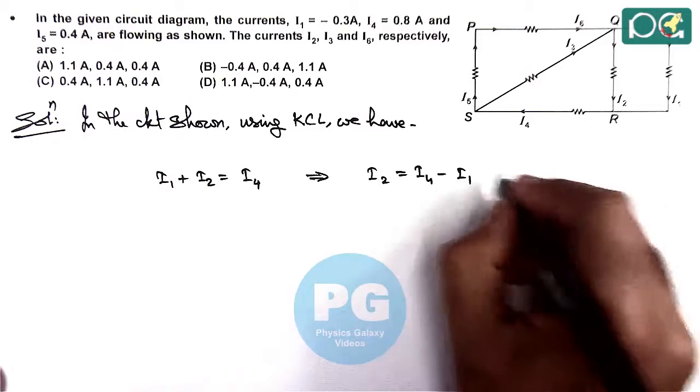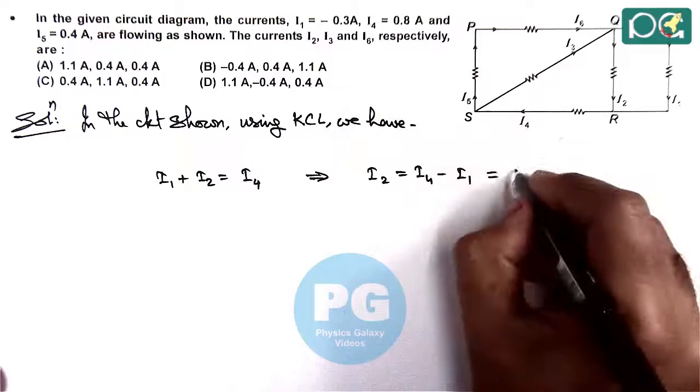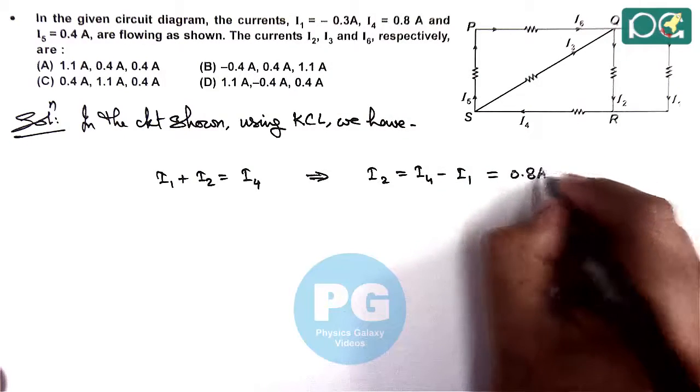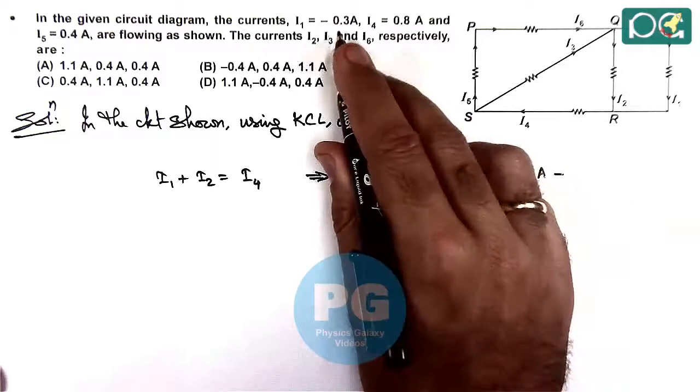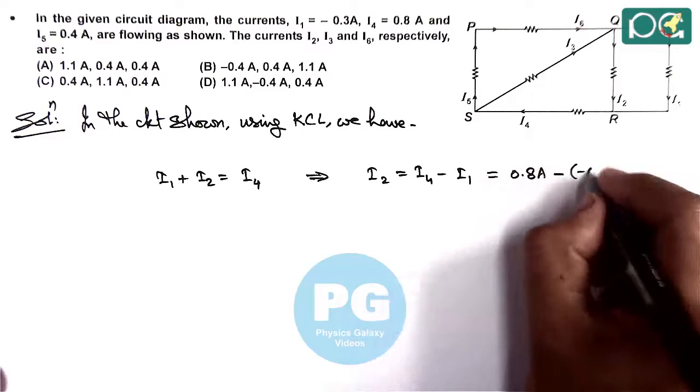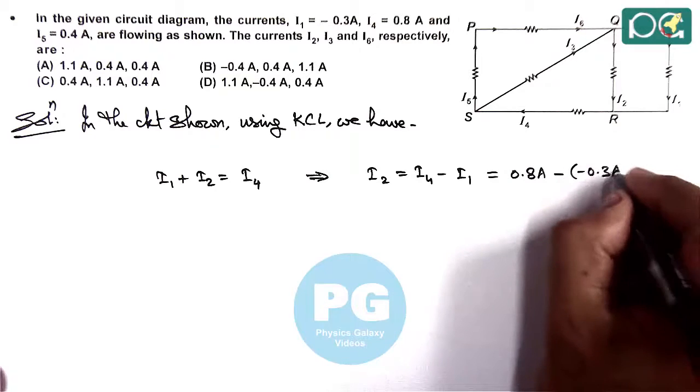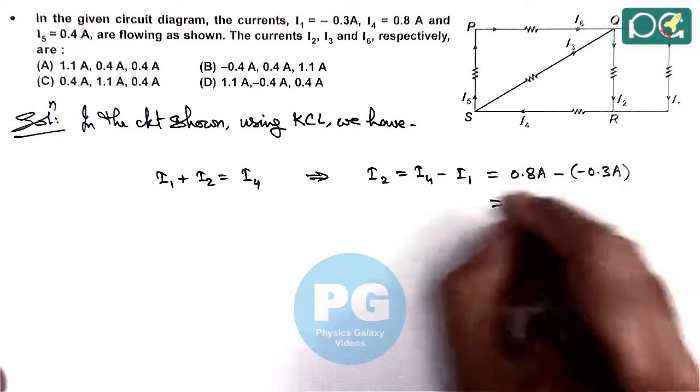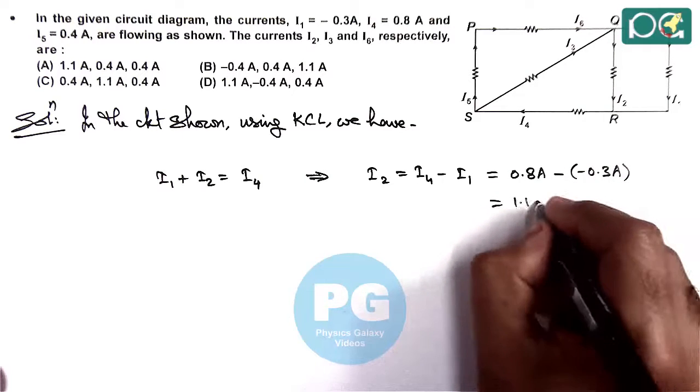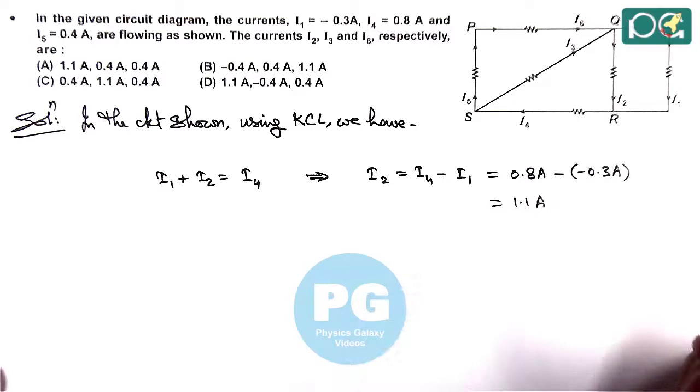And here you can see, the value we are getting: i4 is 0.8 ampere, minus i1 is minus 0.3, then this minus 0.3 ampere gives us i2 is equal to 1.1 ampere.